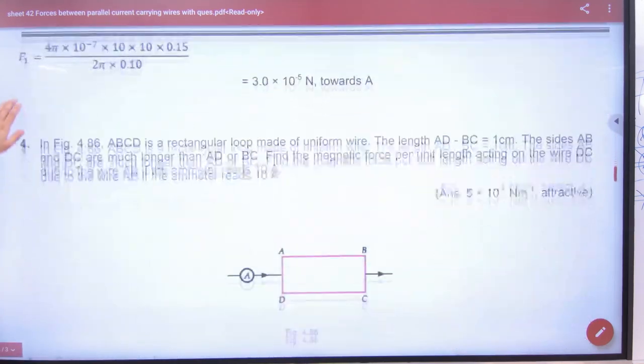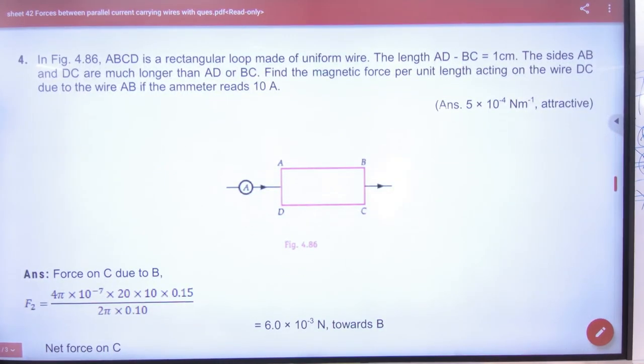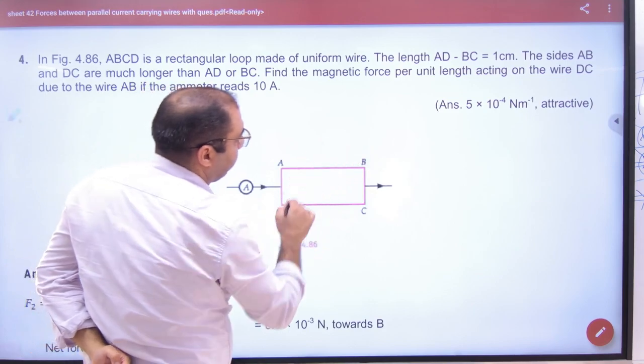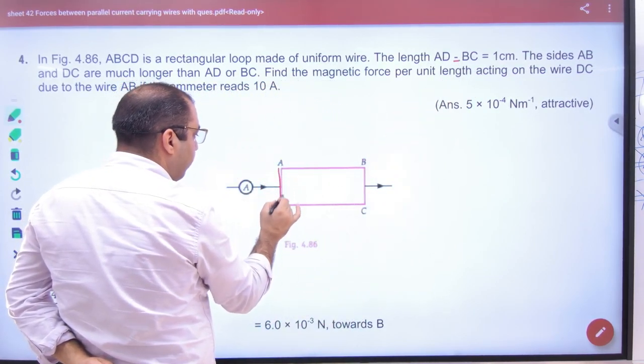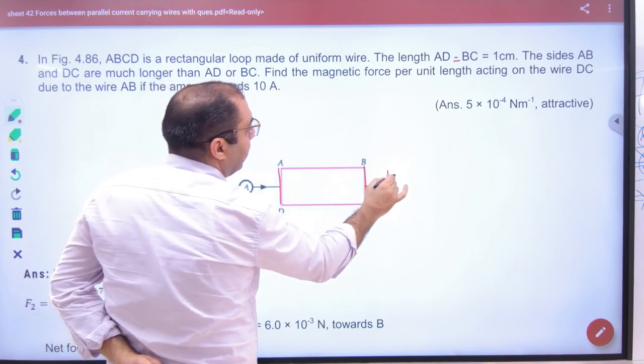Question number 4. Yes sir. AB, CD rectangular loop. AD and BC value is 1 cm given.